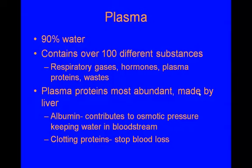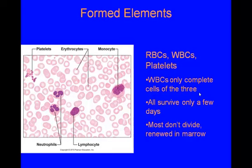The formed elements are three types: red blood cells (erythrocytes), white blood cells (leukocytes), and platelets (thrombocytes). Most of the picture is pale pink erythrocytes, which are by far the most abundant blood cell. The large purple ones are leukocytes — not as many of those. The tiny polka dots are the platelets, and there are even fewer of those. Of the three formed elements, white blood cells are the only complete cell. Platelets are fragments of cells, and erythrocytes have ejected their nucleus and organelles. All of them survive only a few days, most don't divide, and they're renewed in the bone marrow.